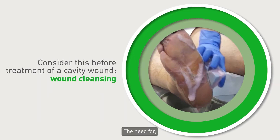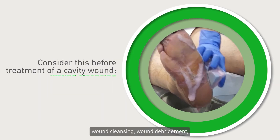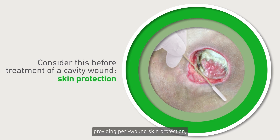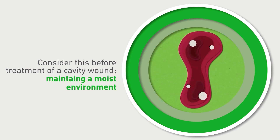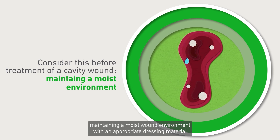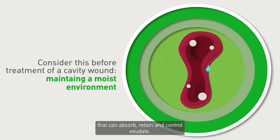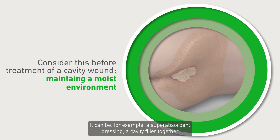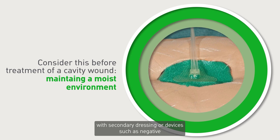The need for wound cleansing, wound debridement, and providing peri-wound skin protection. Maintaining a moist wound environment with an appropriate dressing material that can absorb, retain, and control exudate — for example, a superabsorbent dressing, a cavity filler together with secondary dressing, or devices such as negative pressure wound therapy.